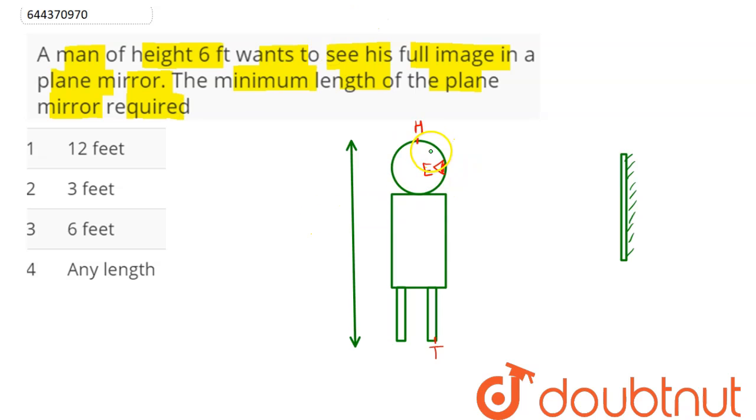so here, this is our person of height given in the question as six feet. And here, this is head, this is eye and this is toe. This here is the plane mirror.